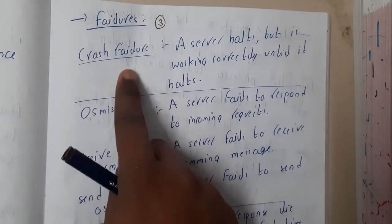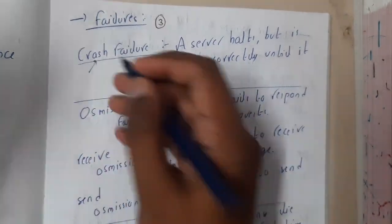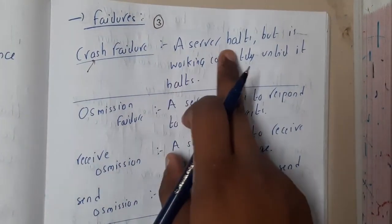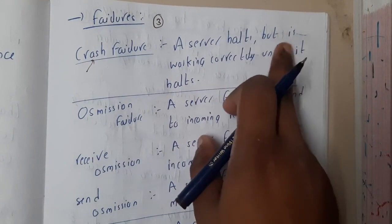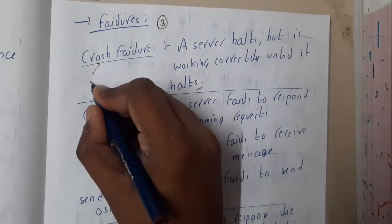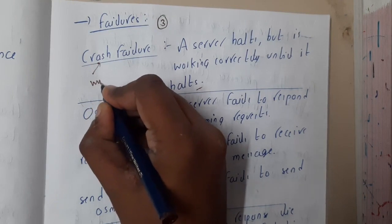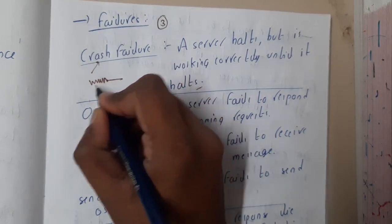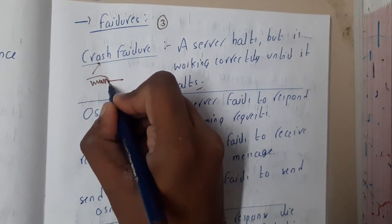The first type of failure is crash failure. Basically from the name, you can see there is a server crash or some kind of crash. A server halts, but it works correctly until it halts. Assume that a transaction is going on, going on, it is done, and now the server has crashed.